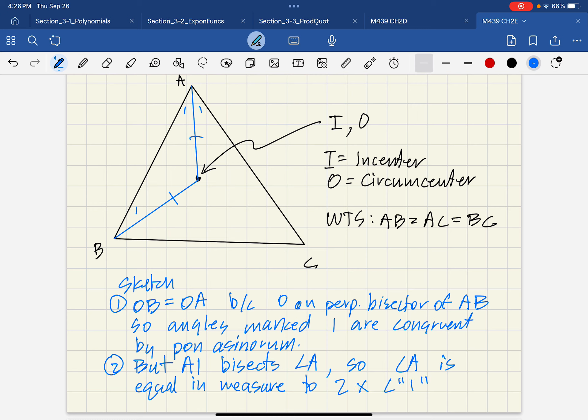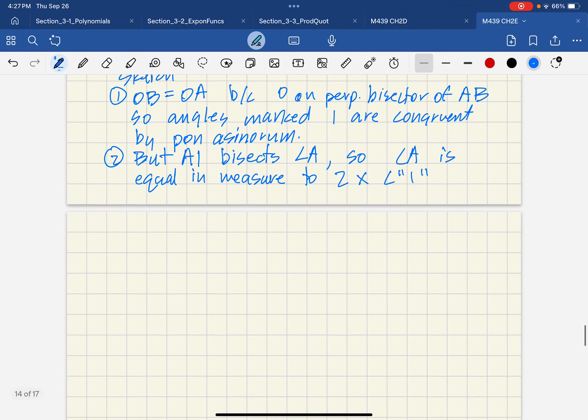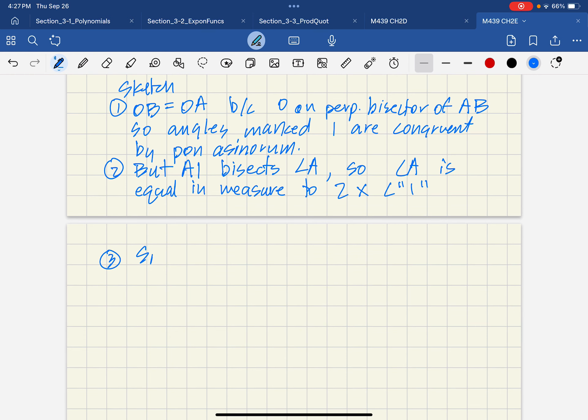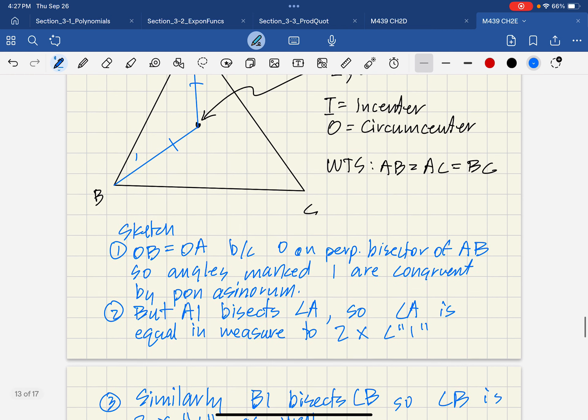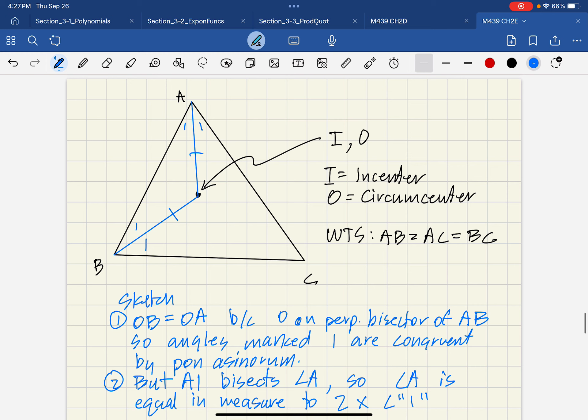So in other words, that guy's bisected. I'll just say 3, similarly, BI bisects B. So angle B is 2 times 1, as well. So 2 times 1, as well, right there.